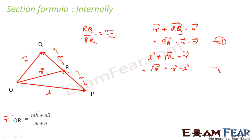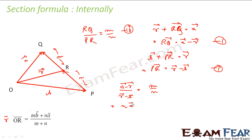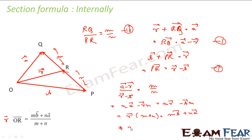So I have equation 1 and equation 2, giving equation 3. Using these, RQ by PR equals A vector minus R vector divided by R vector minus B vector, which equals M by N. Solving: N(A vector minus R vector) equals M(R vector minus B vector), which gives MB vector plus NA vector equals R vector times (M plus N). Therefore, R vector equals MB vector plus NA vector divided by M plus N.